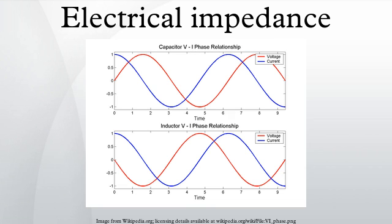Device examples: the impedance of an ideal resistor is purely real and is referred to as a resistive impedance. In this case, the voltage and current waveforms are proportional and in phase. Ideal inductors and capacitors have a purely imaginary reactive impedance. The impedance of inductors increases as frequency increases, while the impedance of capacitors decreases as frequency increases. In both cases, for an applied sinusoidal voltage, the resulting current is also sinusoidal, but in quadrature — 90 degrees out of phase with the voltage.